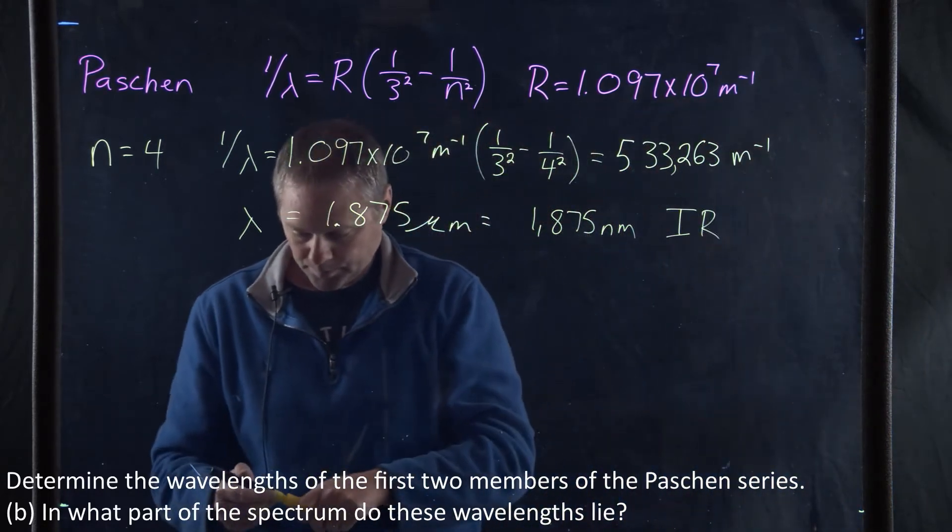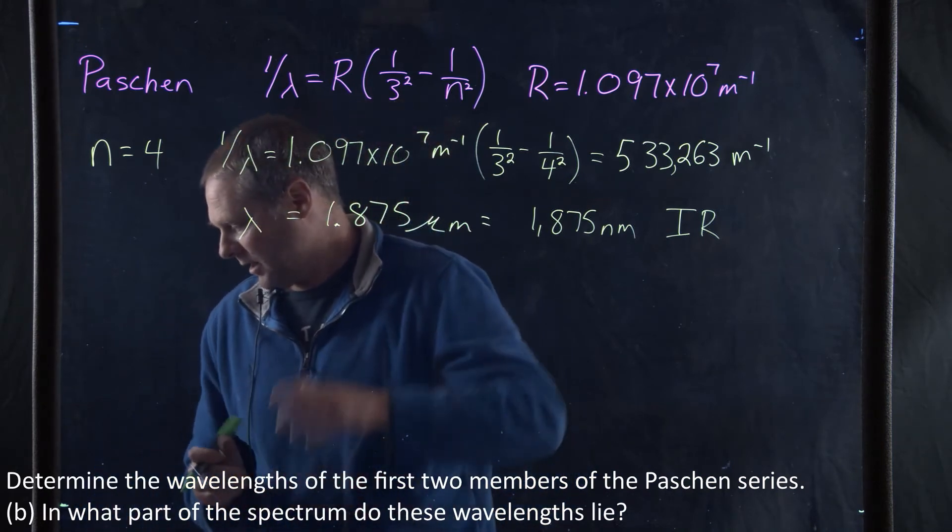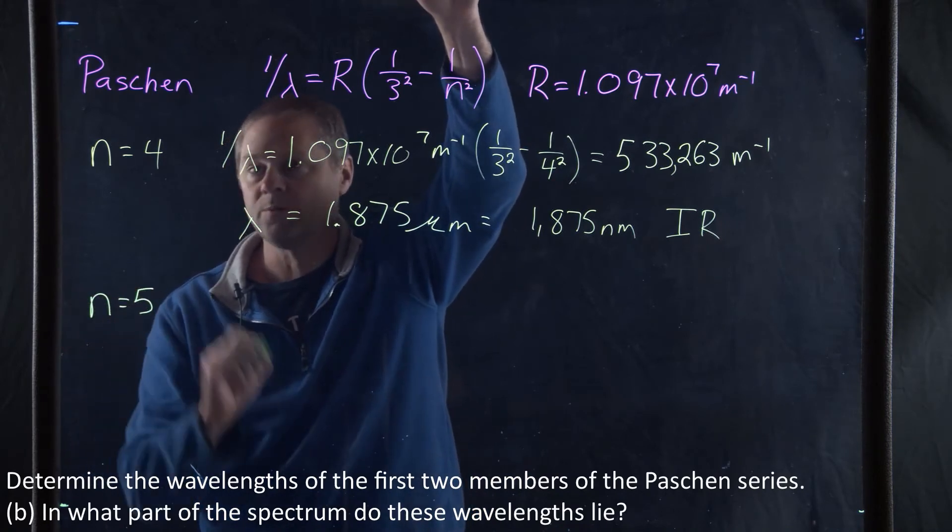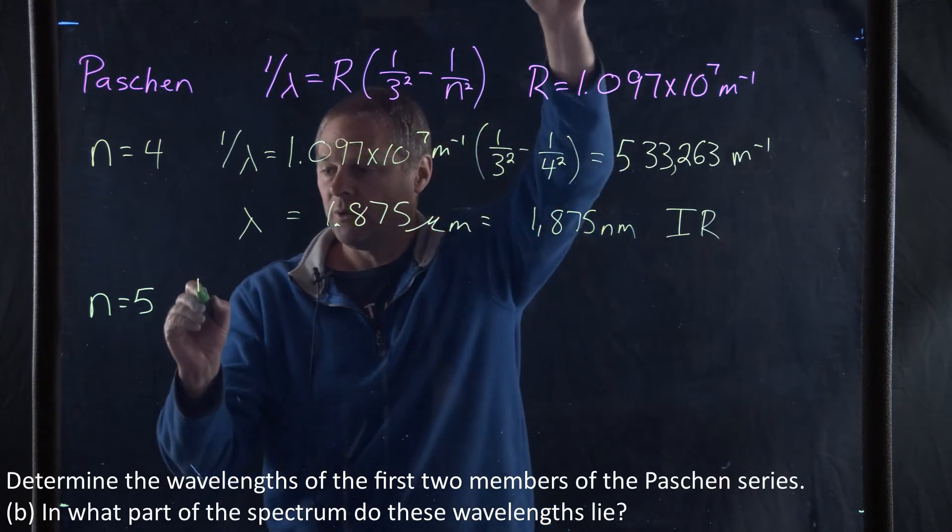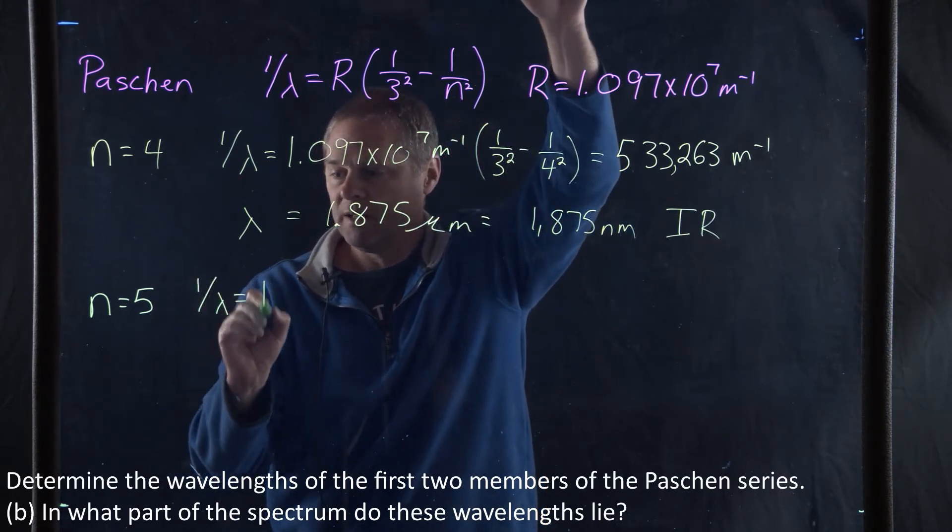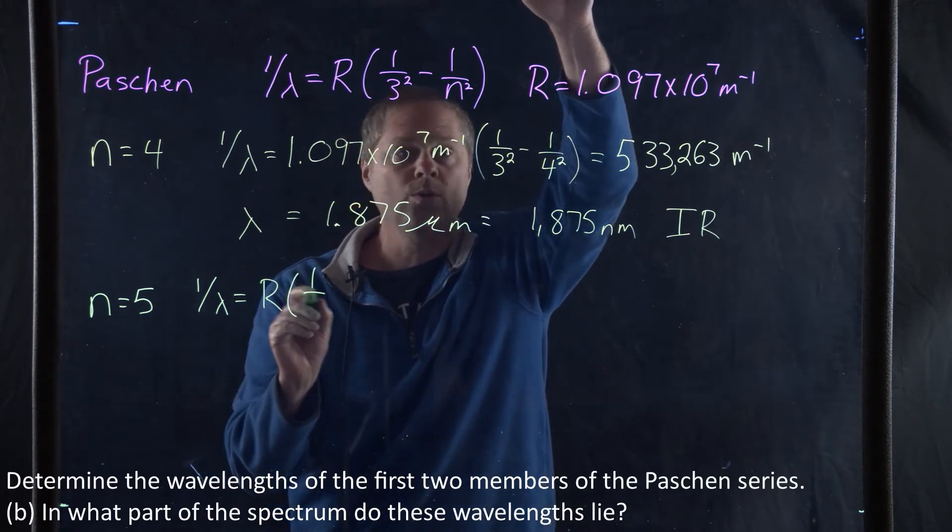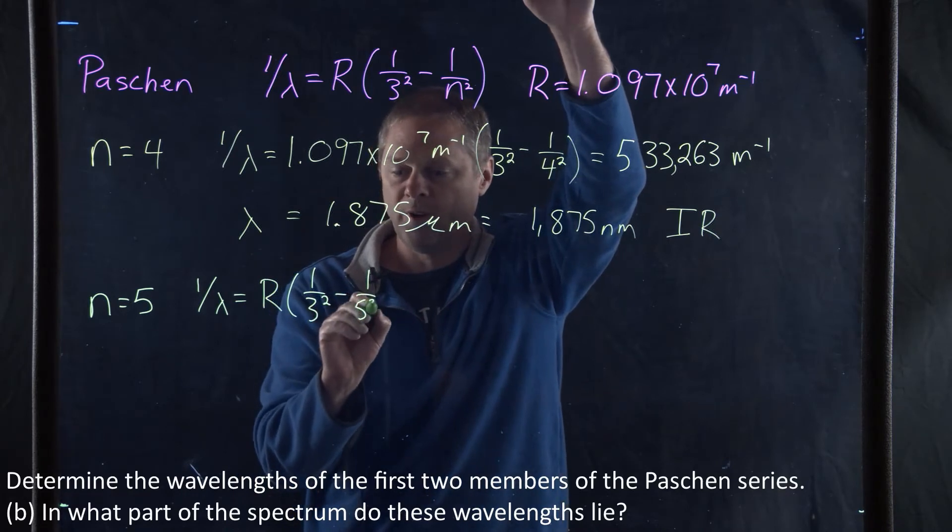If we're going to look at the second member, in that case n is going to be equal to 5. So we simply plug our 5 in. We get 1 over lambda equals R times 1 over 3 squared minus 1 over 5 squared.